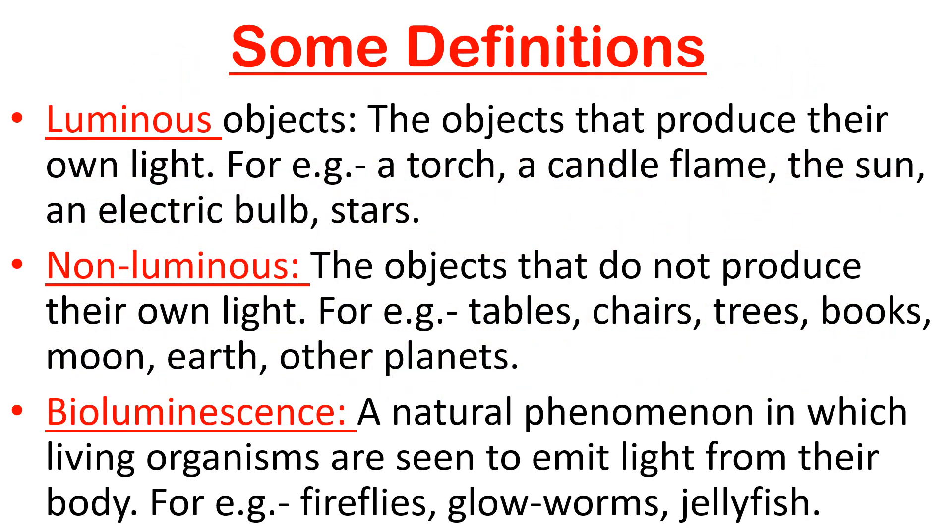Some definitions. Luminous objects: the objects that produce their own light are called luminous. For example, a torch, a candle flame, the sun, an electric bulb and stars.